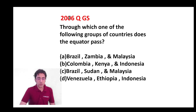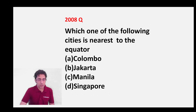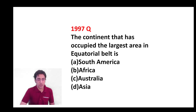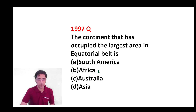Look at this question from the year 2006. In this question, you have to figure out from which of the following countries the equator passes. Now look at this question from the year 2008, where you have to figure out which one of the given places is closest to the equator. And look at this question from 1997, in which you have to figure out which continent occupies the largest area in the equatorial belt.